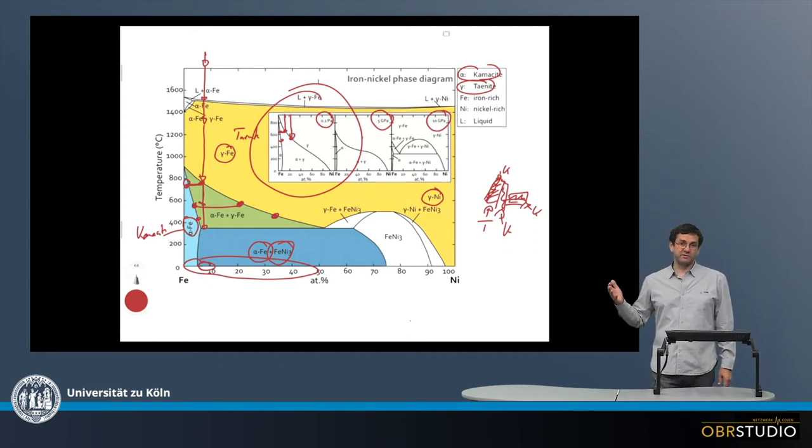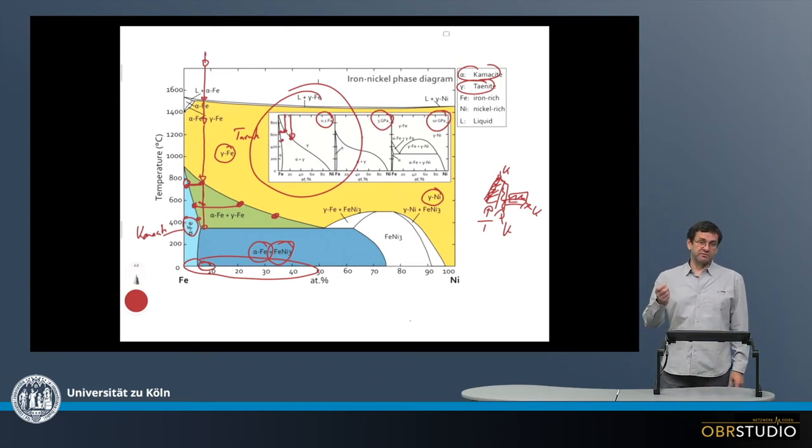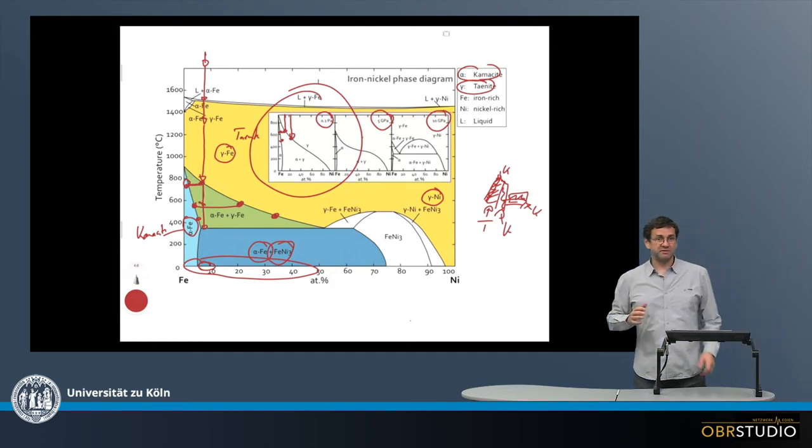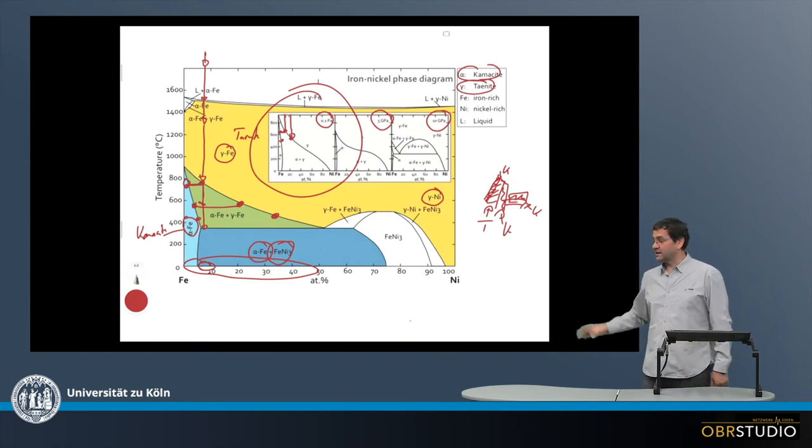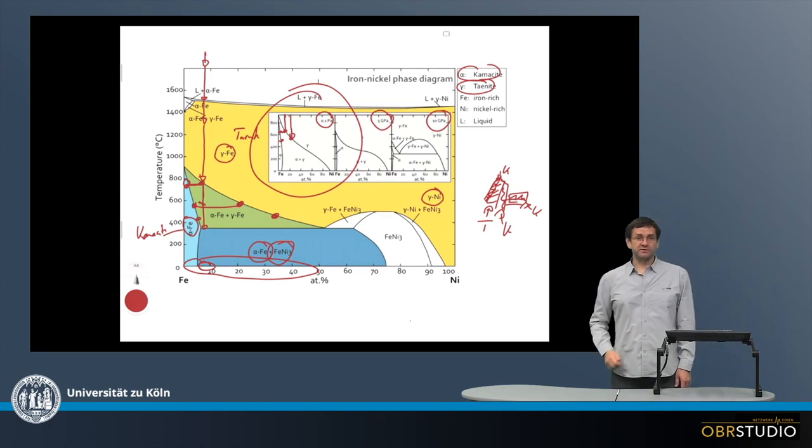The width of these lamellae can be used to determine the cooling history, the cooling gradient of the metal that one is looking at. By this it's possible, for example, to estimate the cooling rate of the metal core of an asteroid or even of a metal blob within a chondrule. The iron-nickel phase diagram can be used for cooling rates and explains why we observe kamacite and taenite within meteorites.